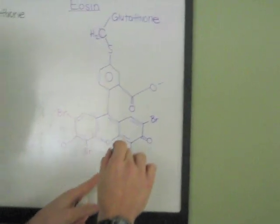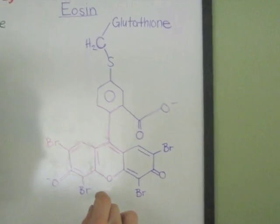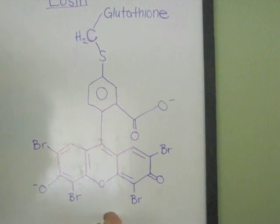This eosin molecule is over here. This is what creates our fluorescence in this molecule. We can see that because the large conjugated system in this molecule is what gives us that property.